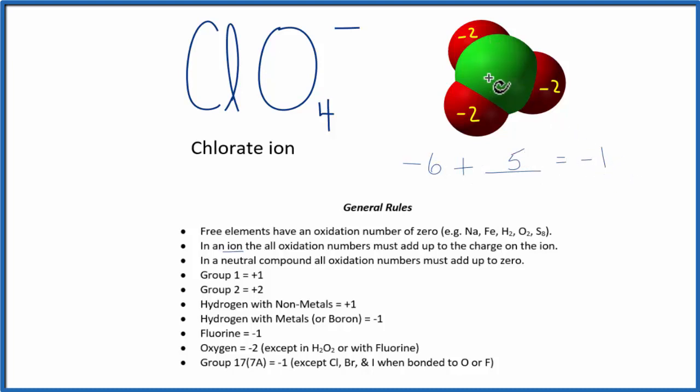So to recap, we found the oxidation number for those atoms that we knew, and then we used those numbers and the charge on the ion to figure out the oxidation of the one we didn't know.